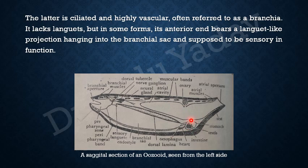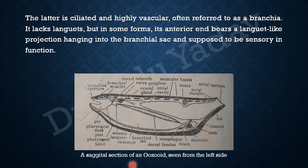The anus opens into the atrial cavity, which lies on top of the branchial cavity. On the dorsal surface are the muscular bands, which can be from 4 to 20. The ovary is located near the atrial cavity, and the atrial aperture is guarded by atrial muscles. The whole animal is enclosed in a test — that thick outer covering. This is the sagittal section of an ozoid seen from the left side.